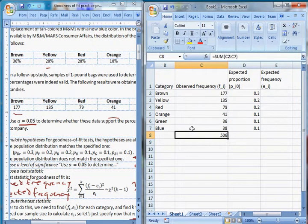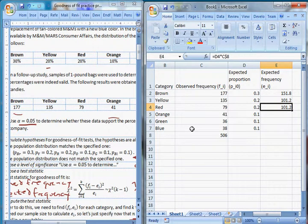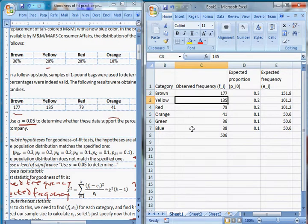And in every case, our expected frequency would be what we would get from the perfect bag. So if we had the perfect bag, 30% of them would be brown, which is 151.8. 20% of them would be yellow and 20% would be red, so 101.2 for each of those. 50.6 of them, 10% would be orange, 10% green, and 10% blue. And in each of these cases, all I'm doing is I'm multiplying this proportion by this total amount because this is n. n equals 506.